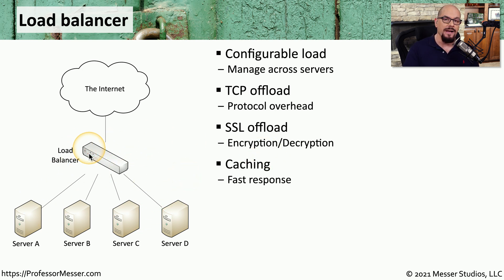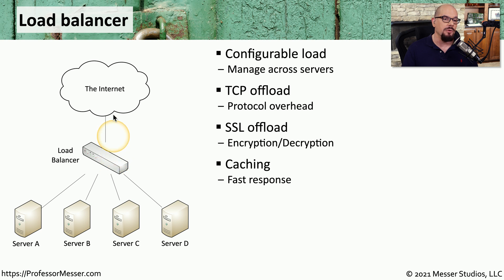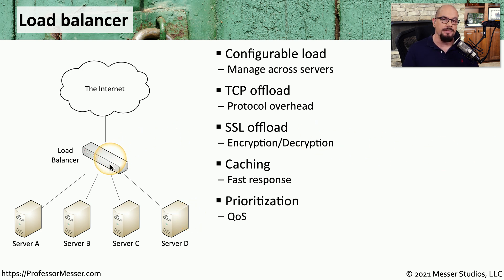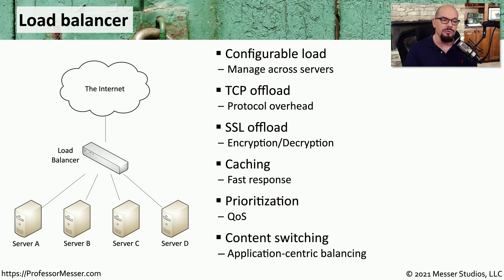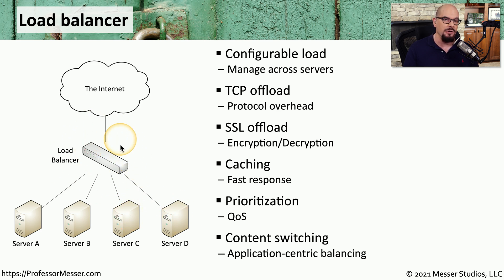The load balancer might also provide caching services, keeping a copy of very common responses. When you make a request and the load balancer already has that response in the cache, it can reply back to you over the internet without ever accessing any of the local servers. Load balancers can also provide quality of service functionality so that certain applications have a higher priority than others running on the same servers. You might also use the load balancer for content switching, where certain applications are switched to individual servers and other applications to other servers within that same load balancer.